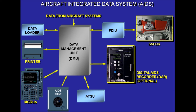The DMU assumes the following: collection, processing, and recording of various aircraft parameters, including the mandatory parameters provided by the FDIU. The recording is made in an internal memory of the DMU and on an optional external recorder called the digital AIDS recorder, DAR. Generation of various reports according to defined conditions — these reports are stored in a non-volatile memory of the DMU. A data loader is used to upload programmed data into the DMU and to download recorded DMU data on a floppy disk for on-ground analysis.